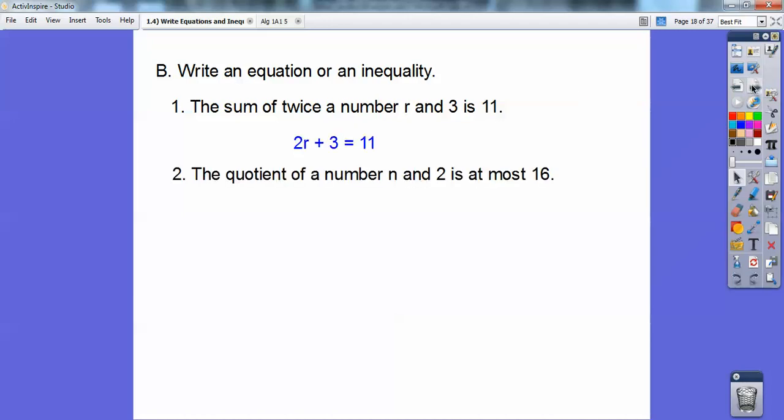The quotient, which is a fraction, which is division, the quotient of N and 2, so this would be N over 2, at most, at most is less than or equal to, so N over 2 is less than or equal to 16.